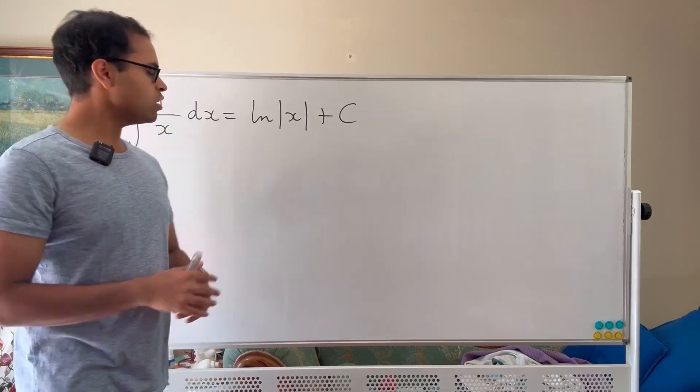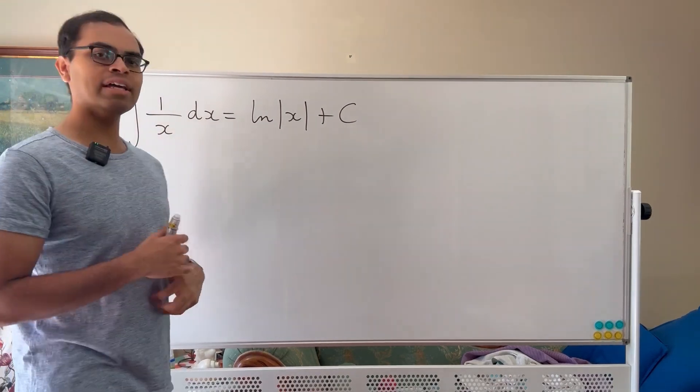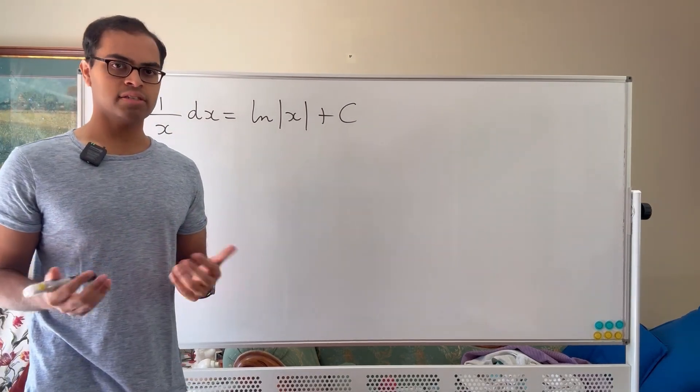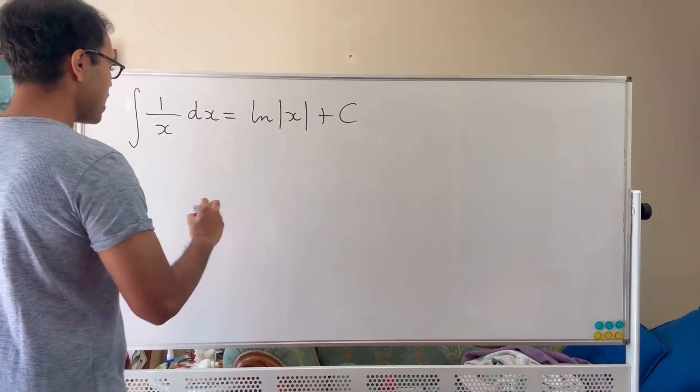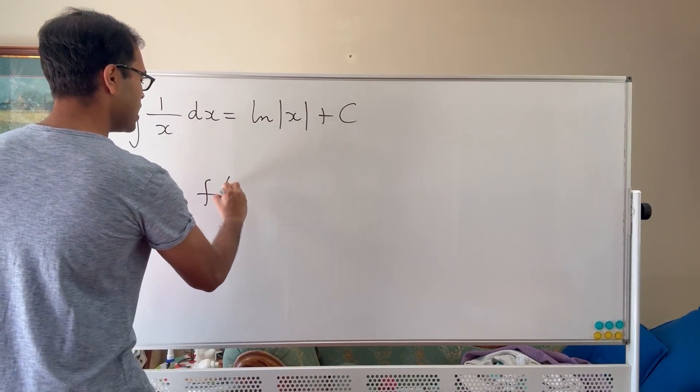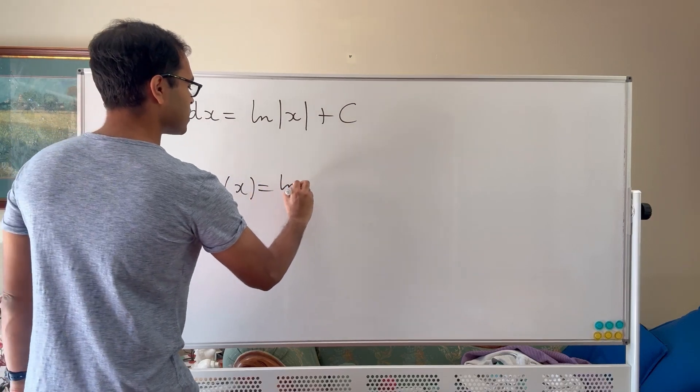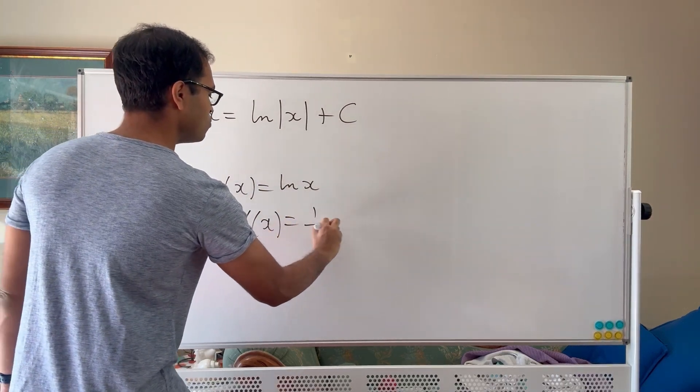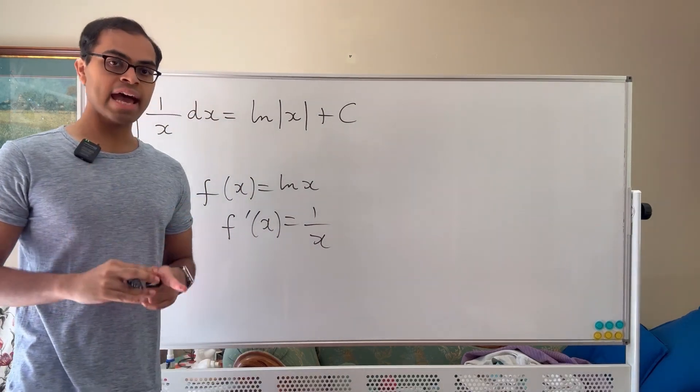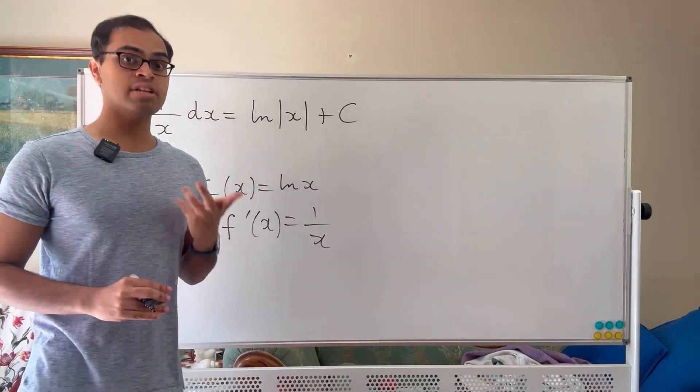When we have the integral 1 over x dx, we want to find the anti-derivative of 1 over x. What function differentiates to be 1 over x? Now the first bet is to just take the function f(x) is equal to the log of x, and in that case we know that f prime of x is going to equal 1 over x. However, the issue is that the log of x is not defined for negative values of x.